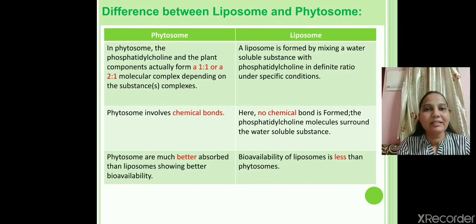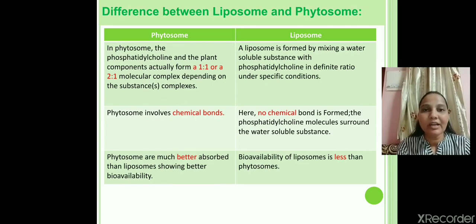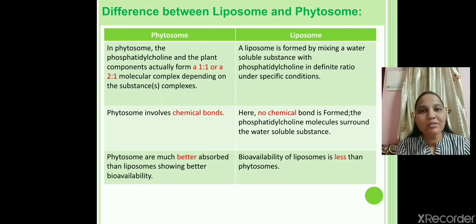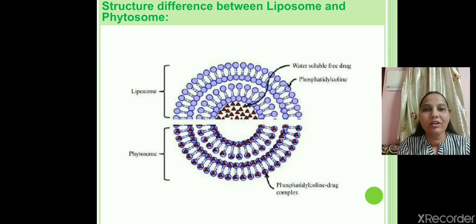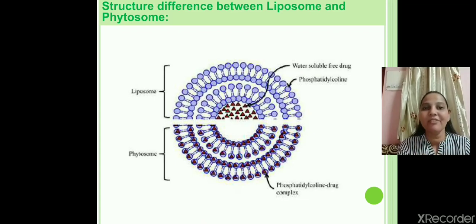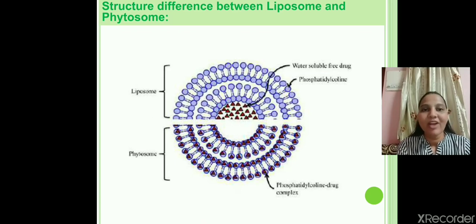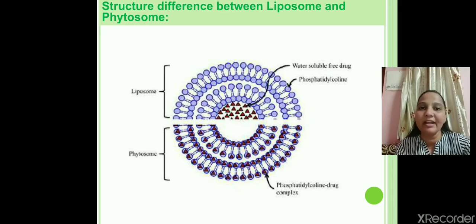The difference between phytosomes and liposomes: in phytosomes, a specific ratio is used, while in liposomes, the ratio depends on the specific condition of the constituent. Phytosomes involve a chemical bond, while no chemical bond is formed in liposomes. Phytosomes have higher viability compared to liposomes. Structurally, in liposomes the water-soluble herbal drug is surrounded by a lipid layer, while in phytosomes the water-soluble drug is available in a triangular form entrapped in a lipid layer.